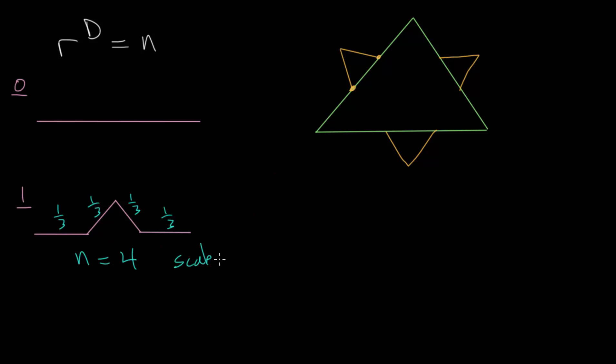That means that our n value, the number of pieces, is four. Our scale factor, which is one over r, is now one-third, which tells us that r is equal to three. And from here, we have enough information to plug this into our equation, and we can solve for this variable d. We have that three, our r value from the scale factor, is raised to the dimension d, and this is equal to the number of pieces, which is four.